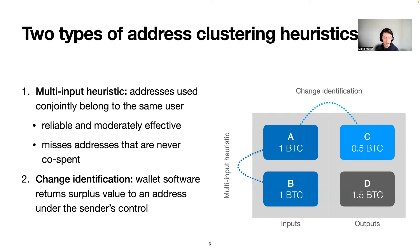A second class of heuristics looks at trying to identify the change of a transaction. So whenever you spend money, the wallet software will return the surplus value to an address under your control. The focus of this paper is on these heuristics that aim at identifying change outputs.